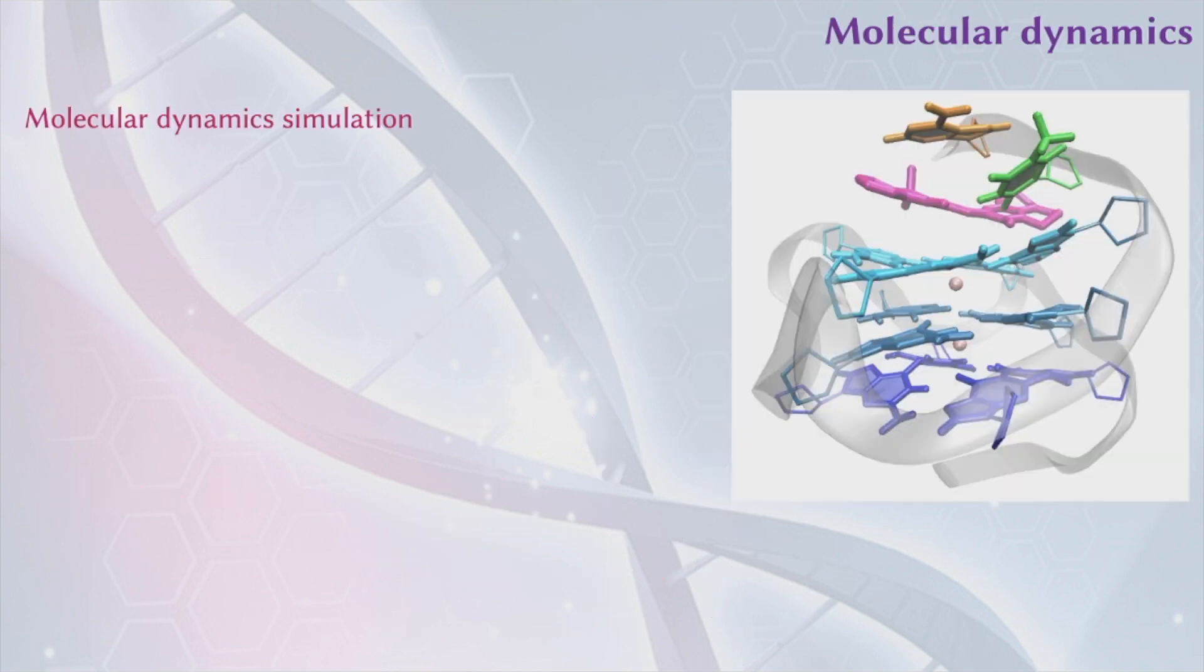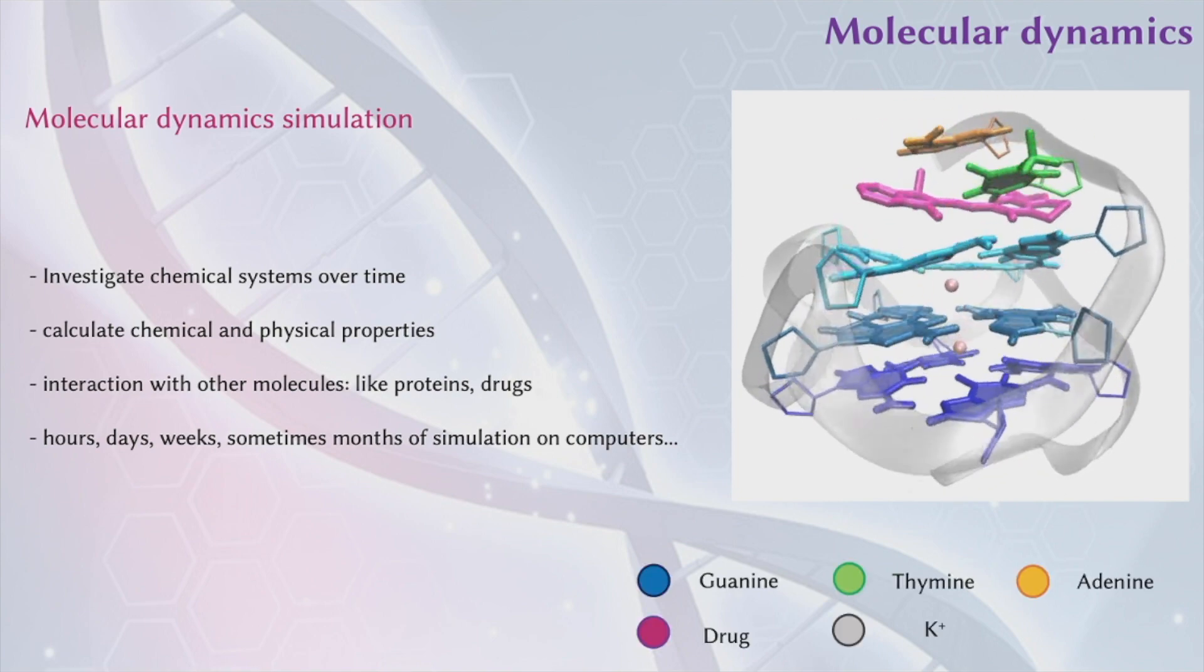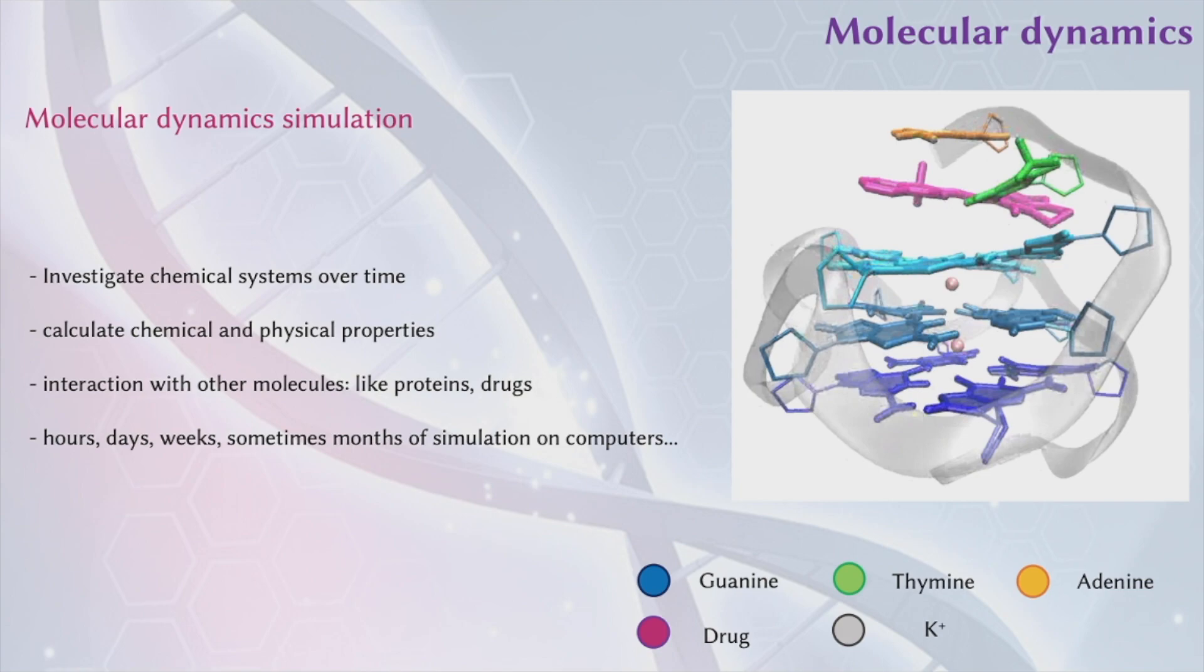As a theoretical chemist, we can do the research with methods like molecular dynamics simulation. In particular, we can investigate chemical systems over time. We can calculate chemical and physical properties. We can calculate the interaction with other molecules, like proteins and drugs. And after hours, days, weeks, sometimes months of simulation on our computer, we actually have our results. We can see our molecules dancing. And we can obtain the information we were looking for.